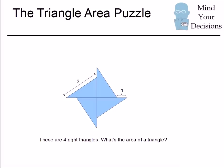Hi, today we're going to solve a puzzle called the triangle area puzzle. What we have is four different triangles where the hypotenuse is three and the length of one leg is one unit longer than the other.